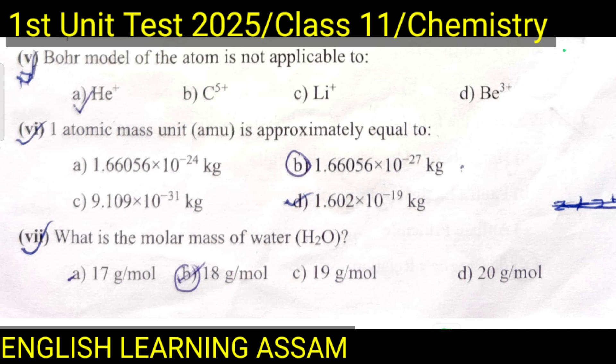Question number four: One atomic mass unit (u) is approximately equal to — A. 1.66056×10⁻²⁴ kg, B. 1.66056×10⁻²⁷ kg, C. 9.109×10⁻³¹ kg, D. 1.602×10⁻¹⁹ kg. The correct option is B: 1.66056×10⁻²⁷ kg.